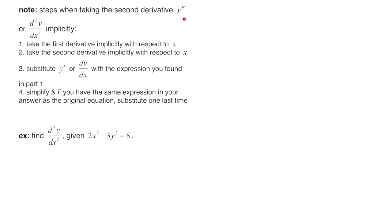Next, we're going to take the second derivative implicitly. The notation is either y double prime or, in Leibniz notation, d²y over dx². The steps are: first take the first derivative implicitly with respect to x and isolate y prime or dy/dx; then take the second derivative implicitly with respect to x. You'll have an expression containing y prime — substitute the first derivative result in for it so you're no longer left with that symbol, leaving an expression with just x and y. Simplify, and watch for cases where the original equation can be substituted in.